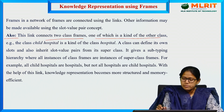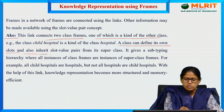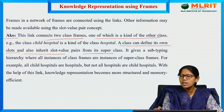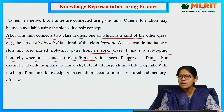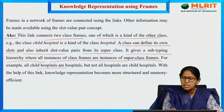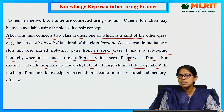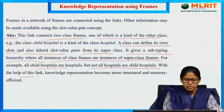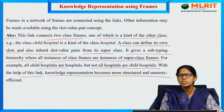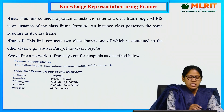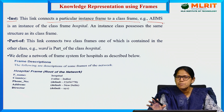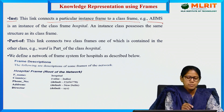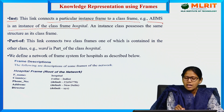It gives a subtyping hierarchy where all instances of class frames are instances of superclass frames. For example, all child hospitals are hospitals, but not all hospitals are child hospitals. With the help of this link, knowledge representation becomes more structured and memory efficient. The next term is 'instance' — this link connects a particular instance frame to a class frame. For example, Ames is the hospital name, which is an instance of the class frame hospital.